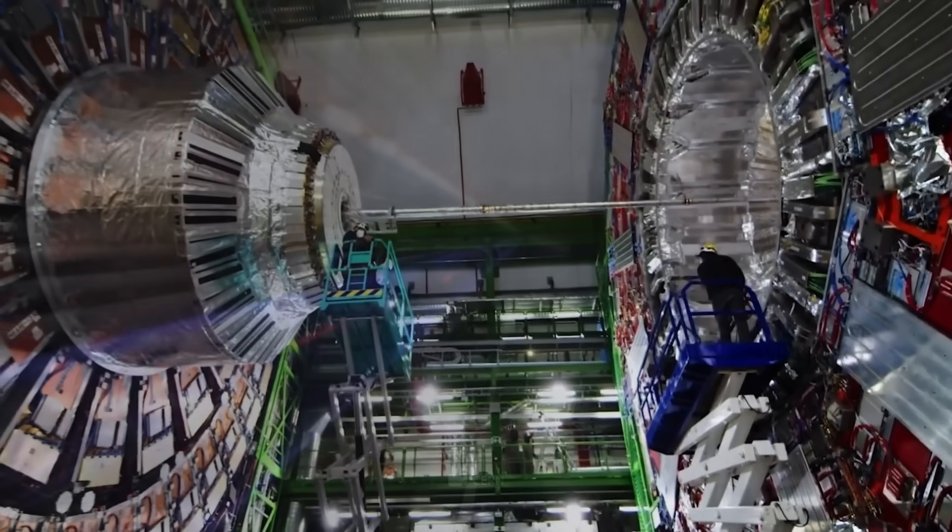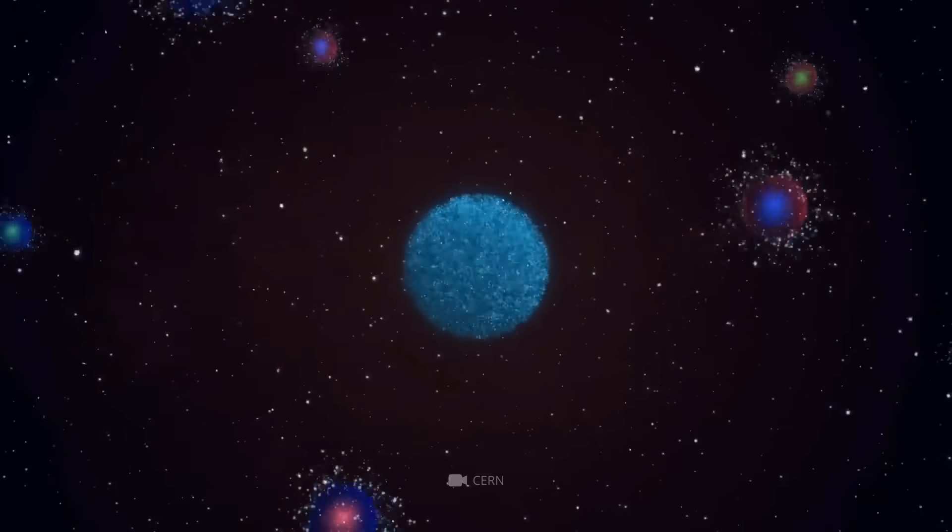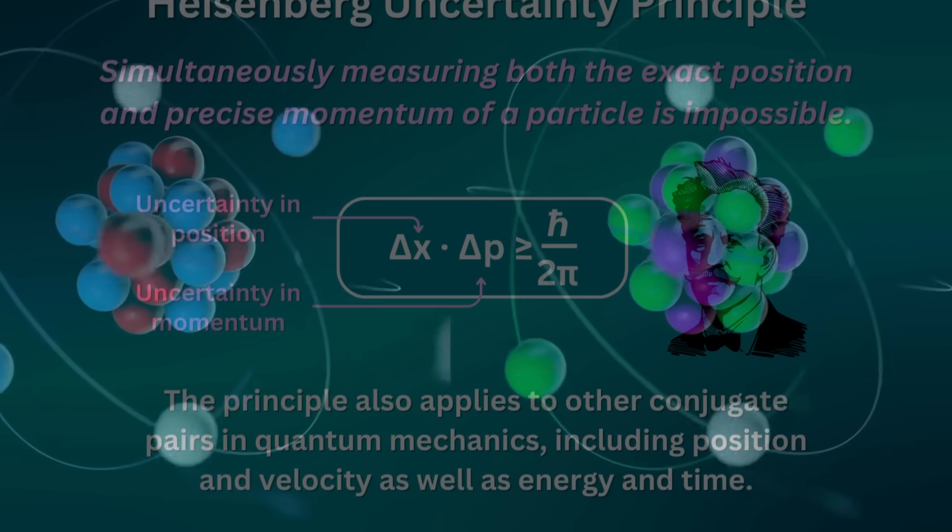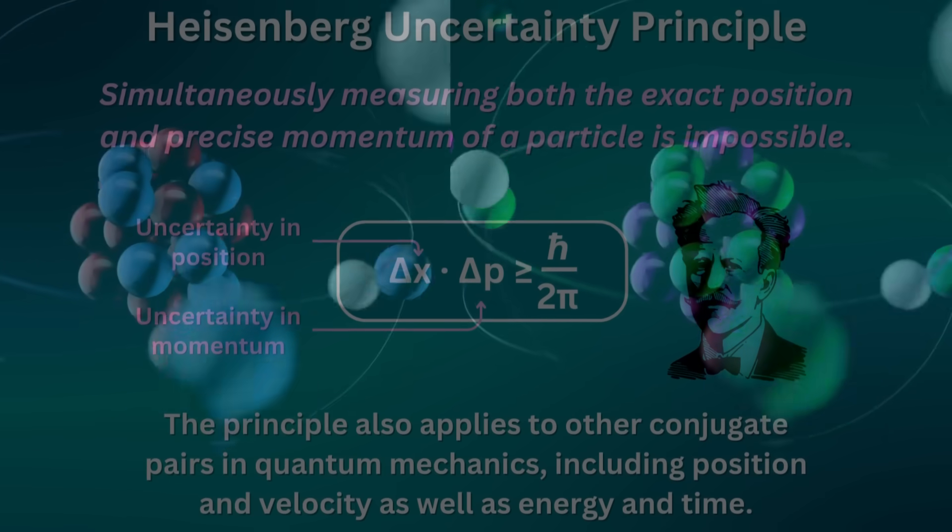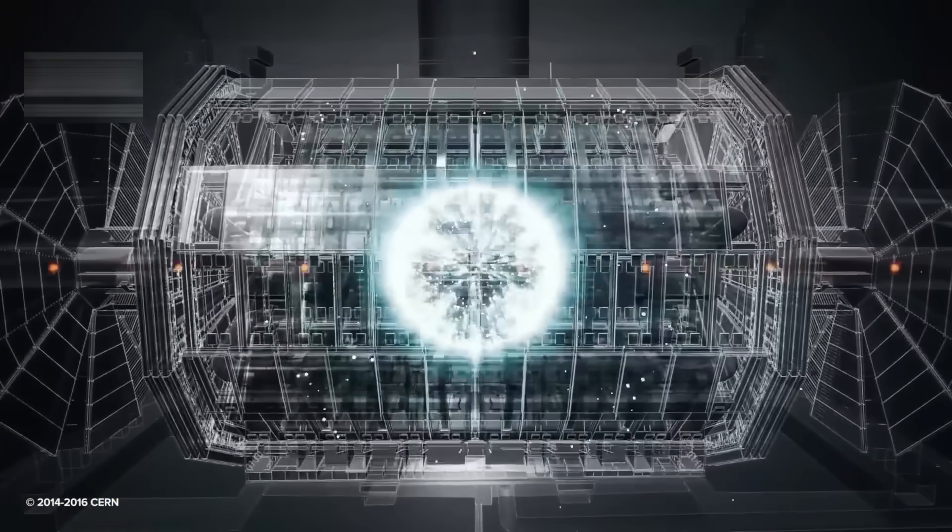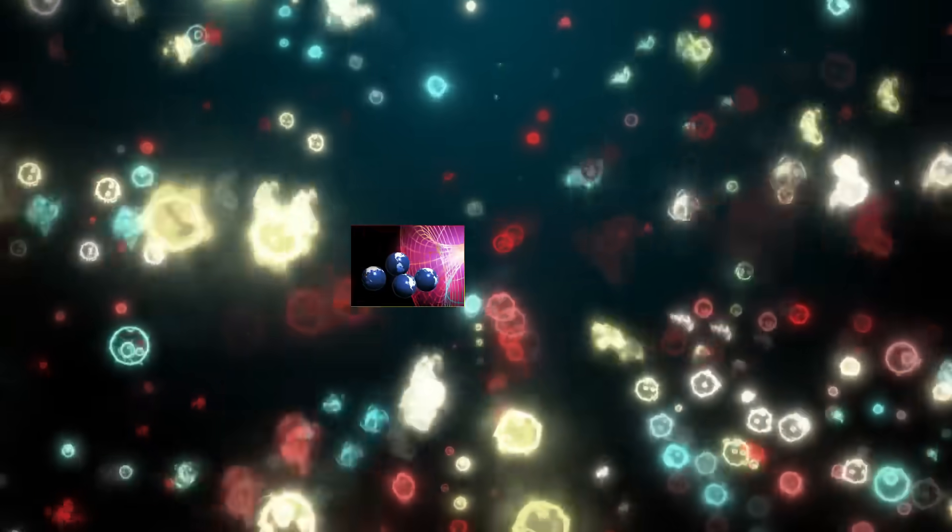CERN's Large Hadron Collider has successfully demonstrated quantum tunneling effects with particles 1,000 times larger than ever before, pushing the boundaries between quantum and classical physics. This breakthrough directly challenges the Heisenberg uncertainty principle as we know it and could lead to revolutionary technologies previously only imagined in science fiction. What we're witnessing is the first experimental evidence that quantum effects don't just exist at the subatomic level.